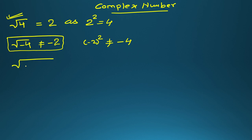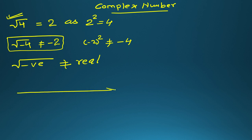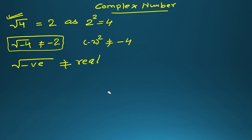In fact, the square root of any negative real number will not be real. Real means any number which can be represented on the number line is called a real number — 0, 1, 2, 3, minus 1, and so on. Any rational, irrational, any number you can represent on the number line is called a real number. So when the square root of any negative number is not real, we cannot represent it on the number line. Where we will represent it, we will discuss later in this video.